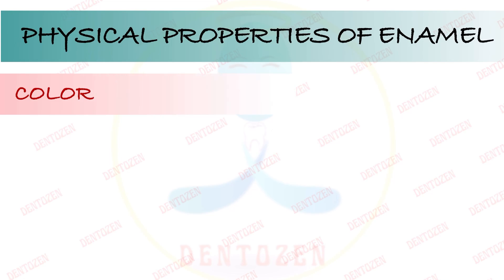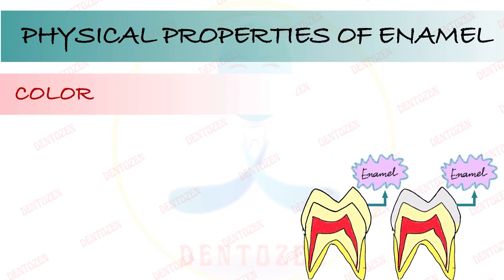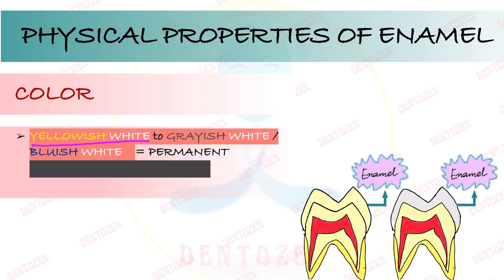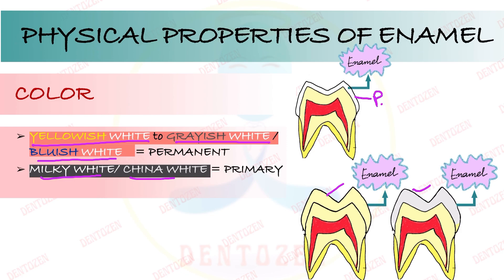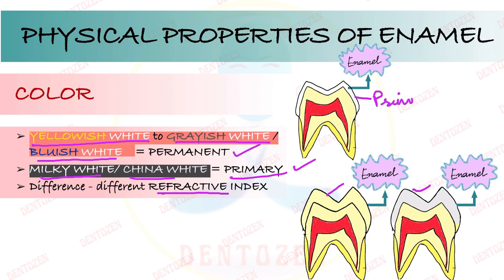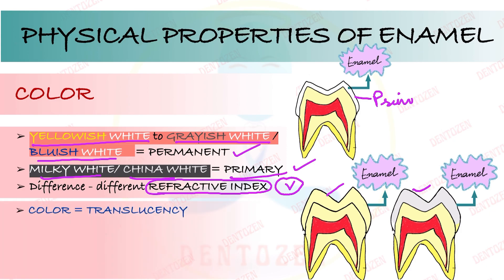Now let's talk about color. In permanent teeth, the color of enamel ranges from yellowish white to grayish white or bluish white. In primary teeth, the color is milky white or china white. That is your viva question. Why this color difference? It is because of their different refractive indices, which is another viva question. Color is determined by the translucency of enamel, which depends on the degree of mineralization and enamel homogeneity.